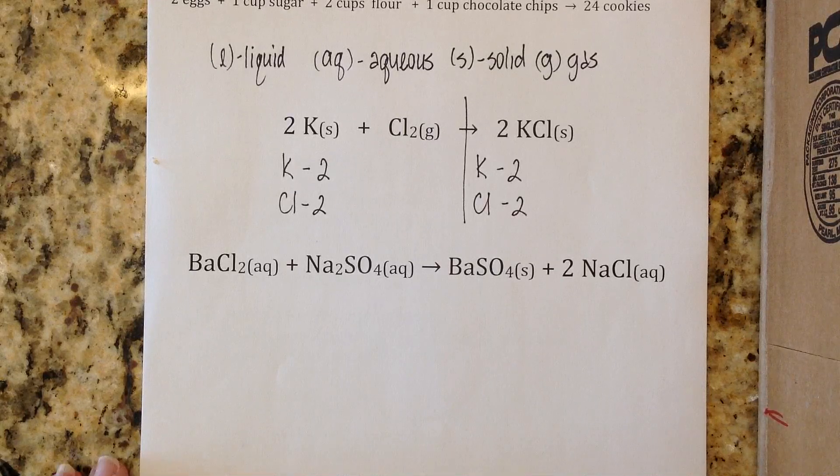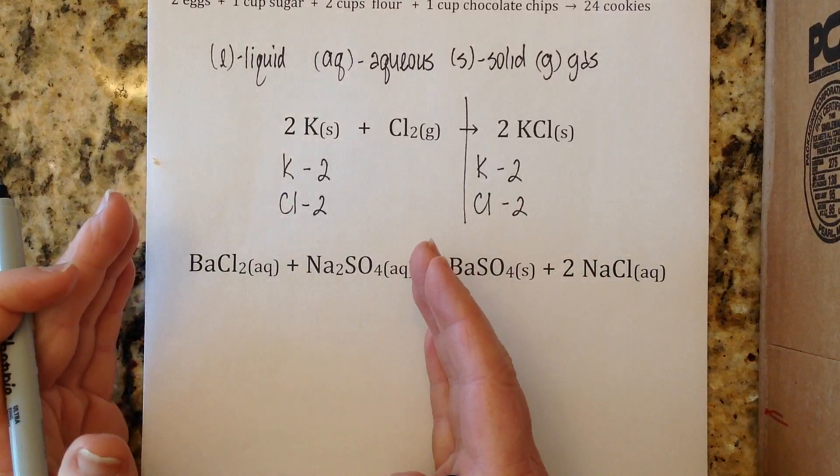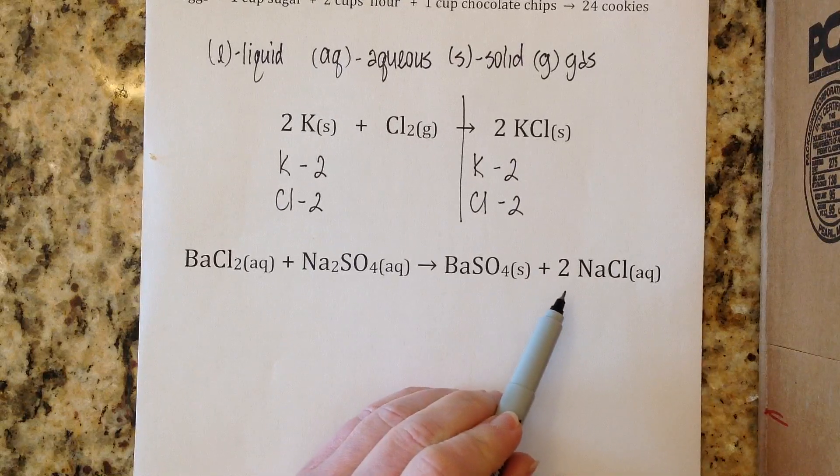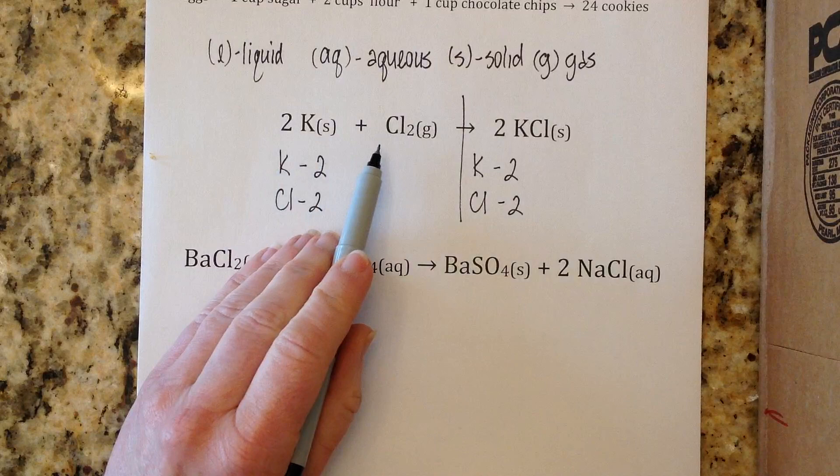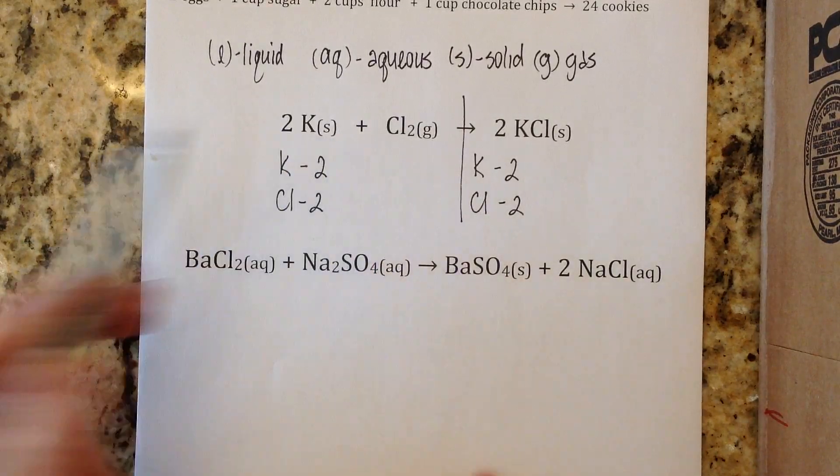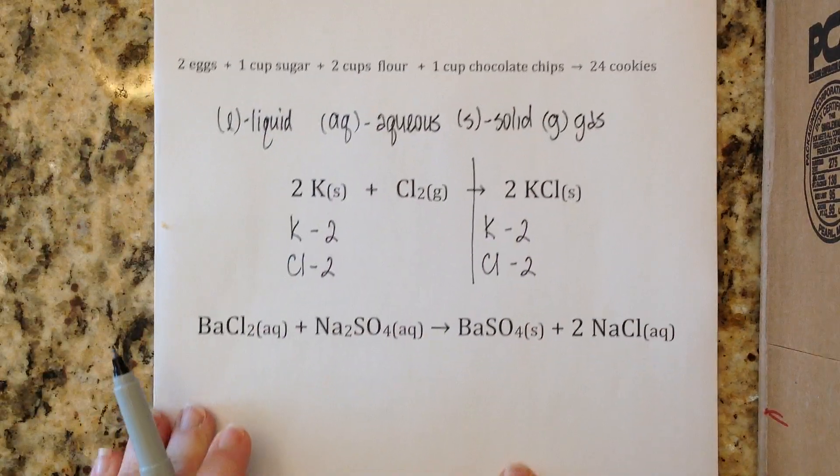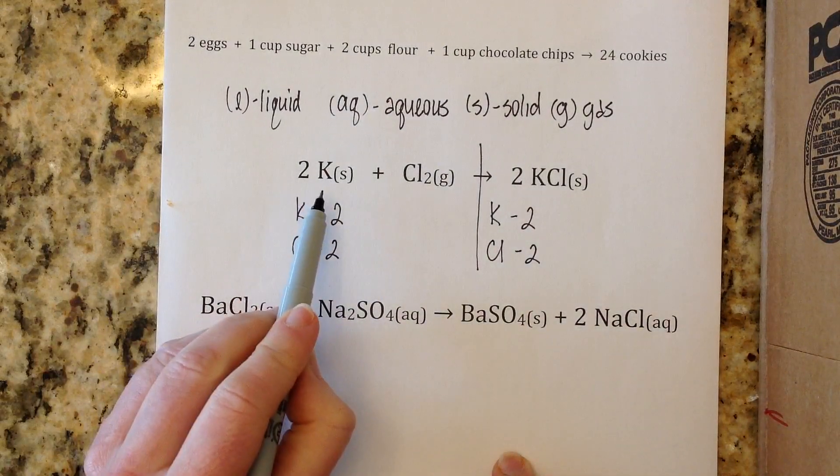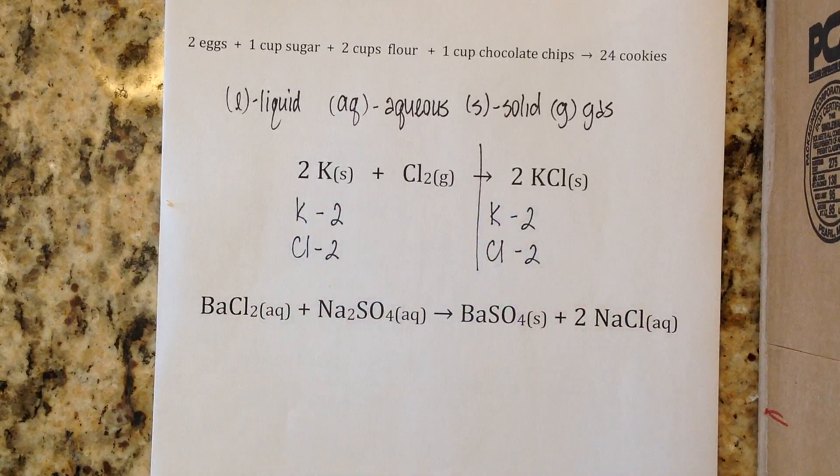I want you to again think of chemical reactions as recipes. They're telling you exactly what you're mixing together, exactly what you're getting. The coefficients in front tell you how much - 2 moles of this, 1 mole of this. We use the term moles when we're reading reactions, just like if you're reading a recipe we may use cups or tablespoons or teaspoons. In chemistry we use moles.